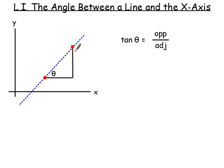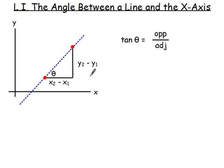You need to know the lengths of the sides. If you know the two points, the length of the vertical line is found by subtracting the y-coordinates, and the length of the horizontal line by subtracting the x-coordinates. So y2 minus y1 gives you the vertical length, and x2 minus x1 gives you the horizontal length. So opposite over adjacent is really just y2 minus y1 over x2 minus x1.